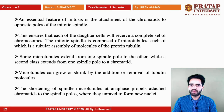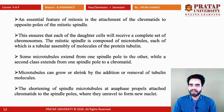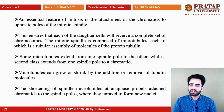The main feature of mitosis is the attachment of chromatids to the opposed poles of the mitotic spindle. Because of this, each daughter cell receives a complete set of chromosomes. The mitotic spindle consists of microtubules, assembled by a protein called tubulin. Tubulin is important because it helps assemble microtubules.